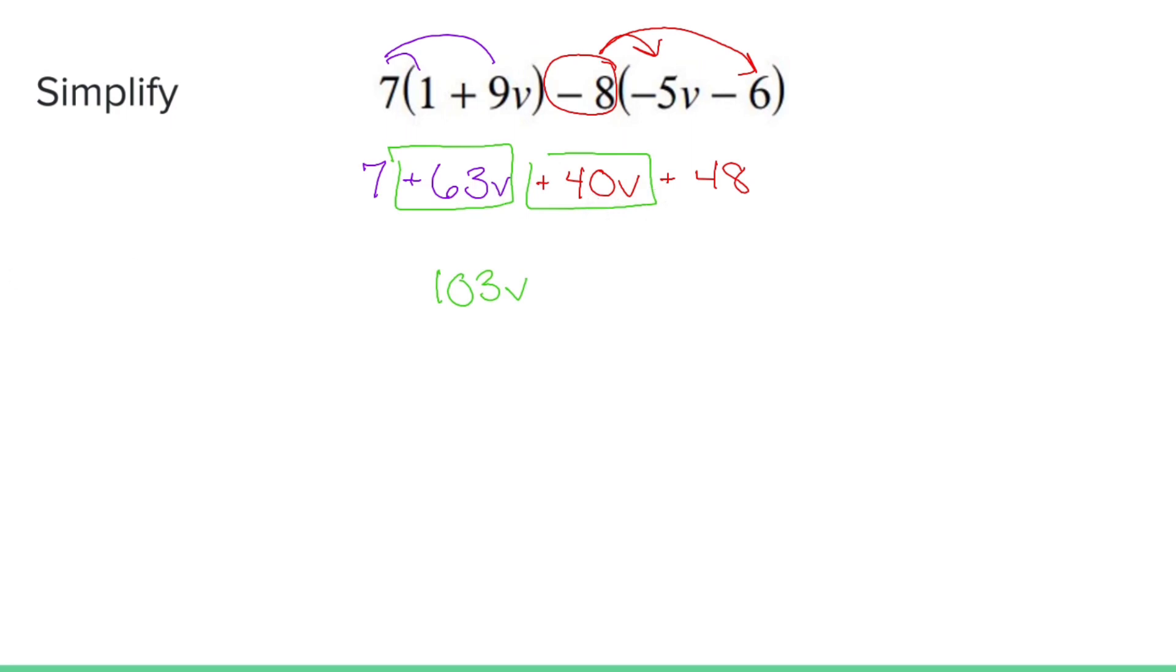Now what we have left over is just regular old constants, 7 and 48. Those add together to make 55.